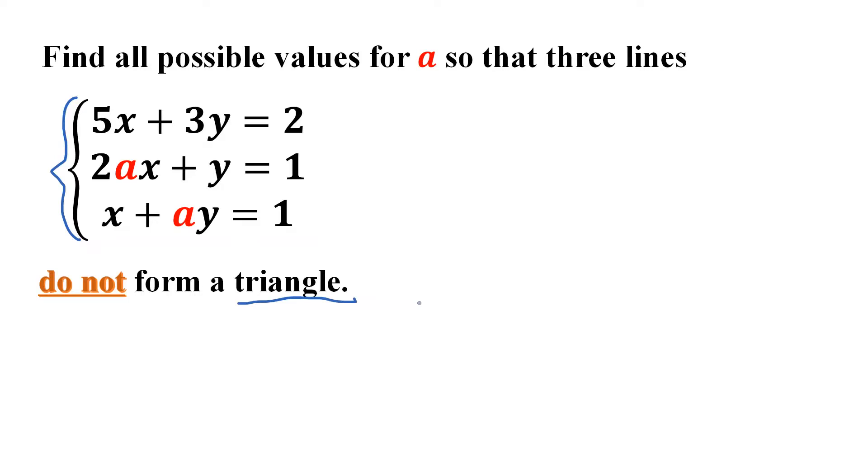So the problem is pretty straightforward. Three linear functions are given, and among them, the first one is a fixed linear function because it doesn't contain A, so the line does not depend on the value of A. And the other two contain parameter A, so the lines change as the value of A changes. We must find the values of A so that the resulting lines do not form a triangle.